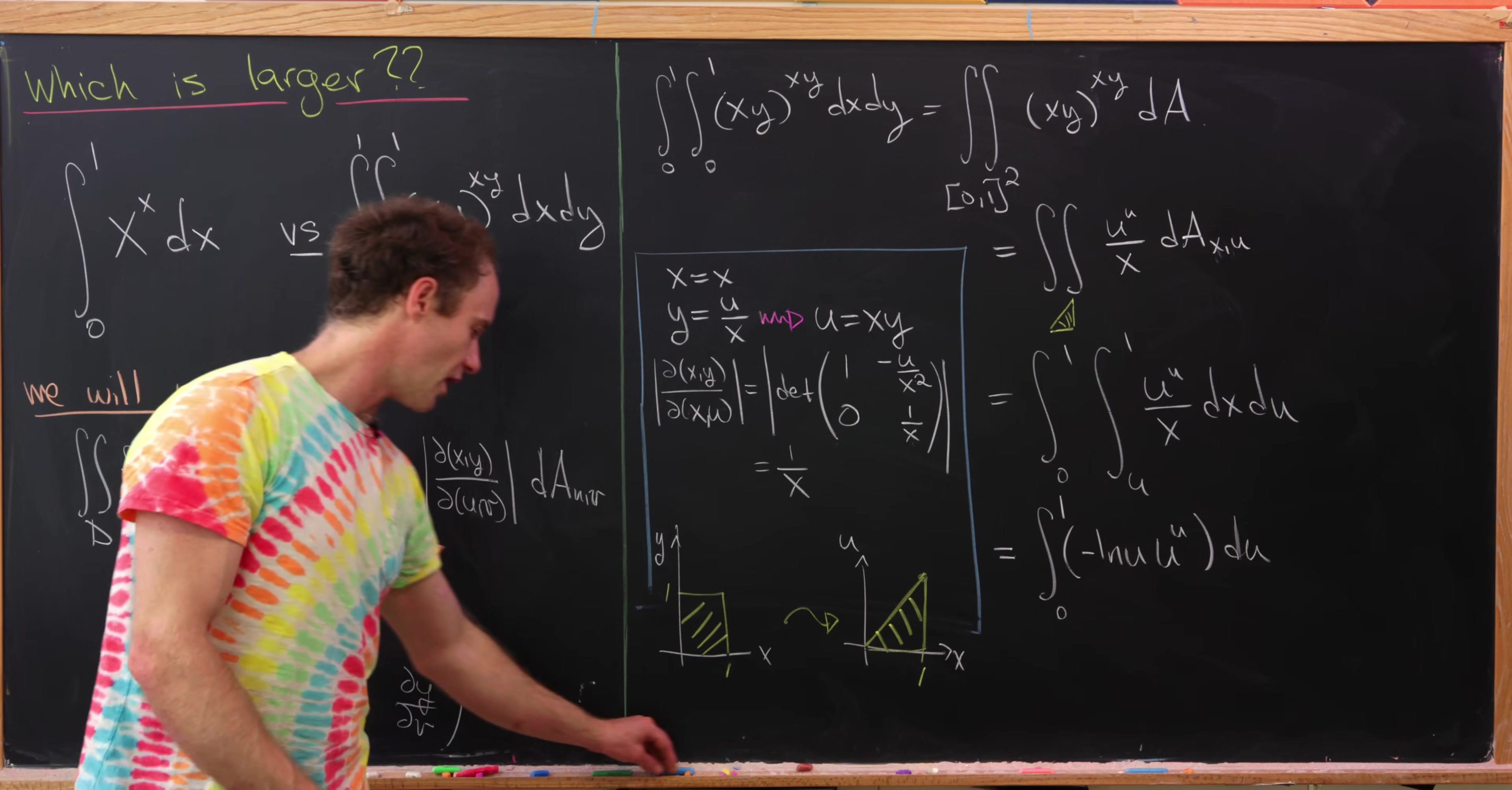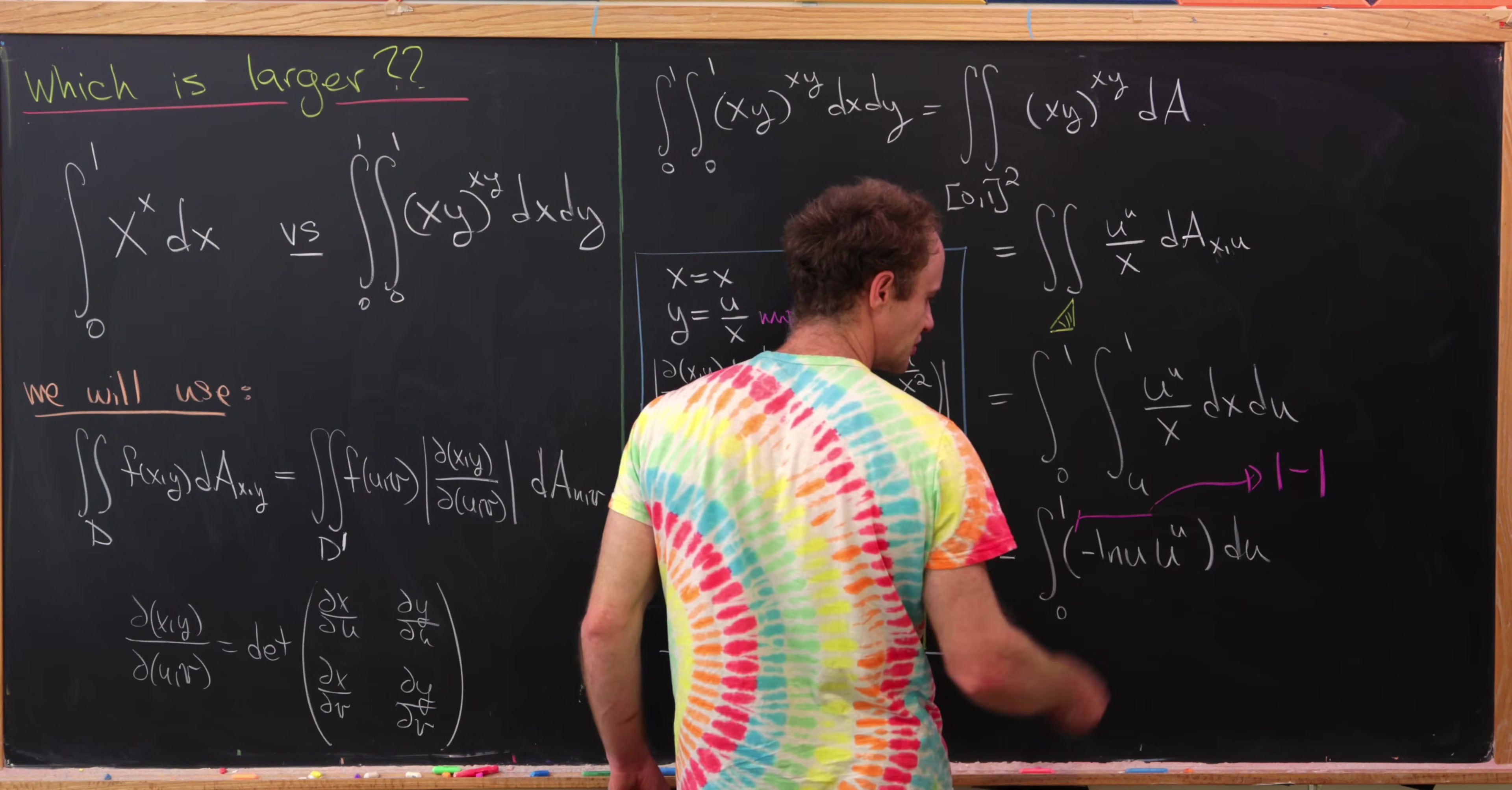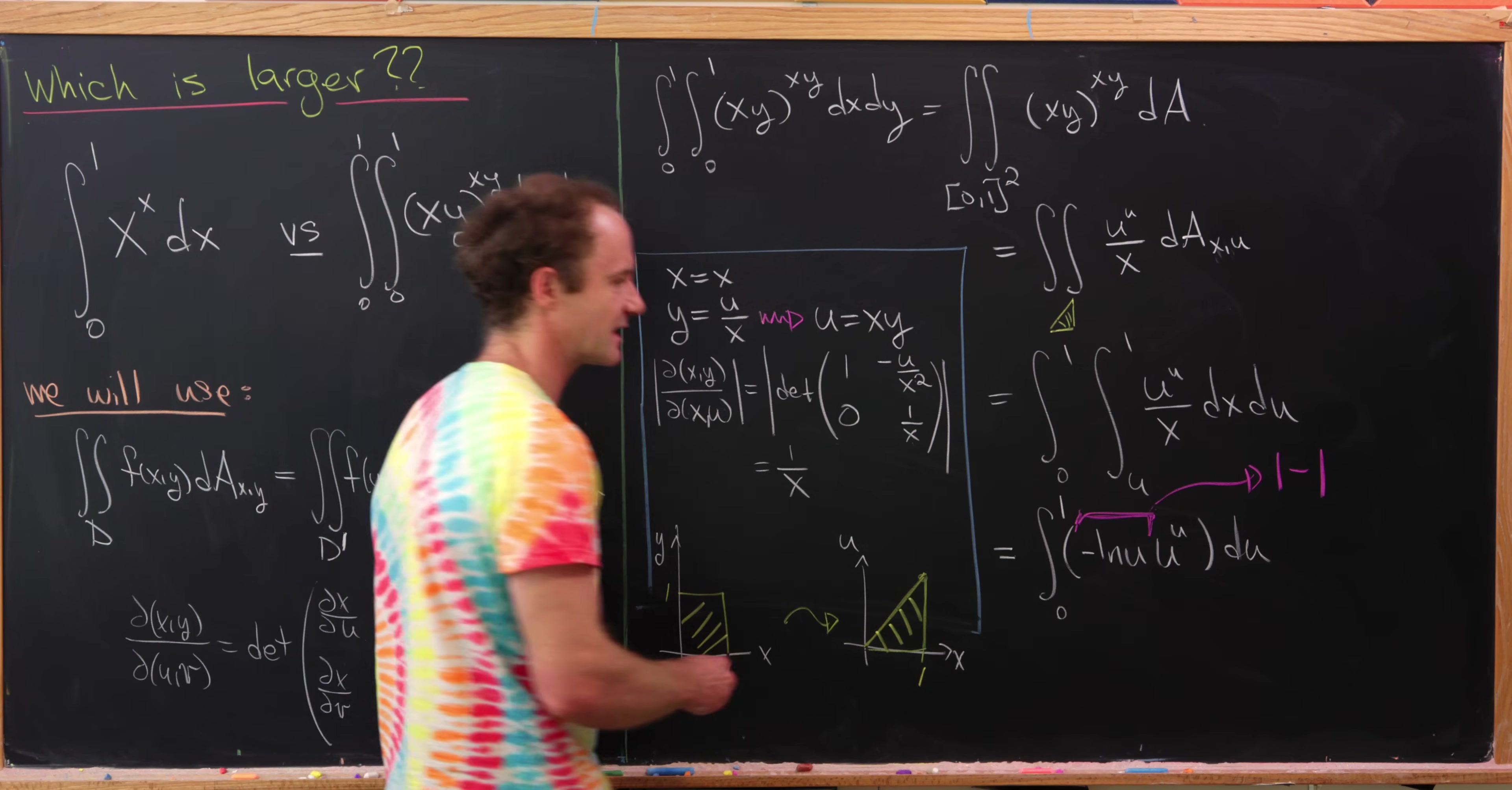But now here we're going to do one of a mathematician's favorite tricks, which is adding the number 0. In this case, the number 0 is of the form 1 minus 1. And let's see, we're going to do that to this thing that's attached to u to the u. In other words, the 1 minus 1 will be multiplied into the u to the u. So anyway, let's see what we have.